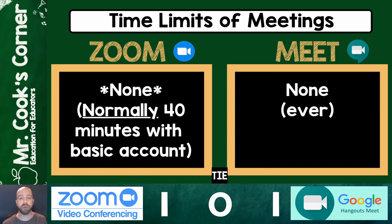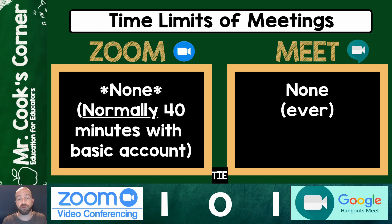Taking a look at time limits for meetings. Due to coronavirus and the pandemic going on right now, Zoom has removed their current time limit. Normally you're allowed 40 minutes on a meeting with a basic account — they've removed that, so right now there is unlimited time on your meetings. However, with Google Meet, this is just all the time, 24-7, no matter what the situation — there will always be an unlimited time meeting frame.